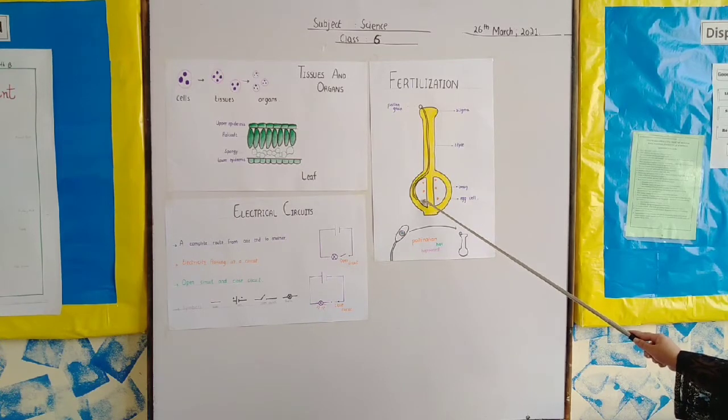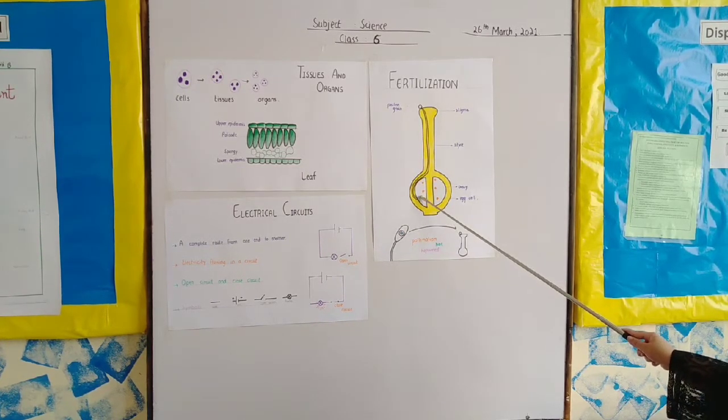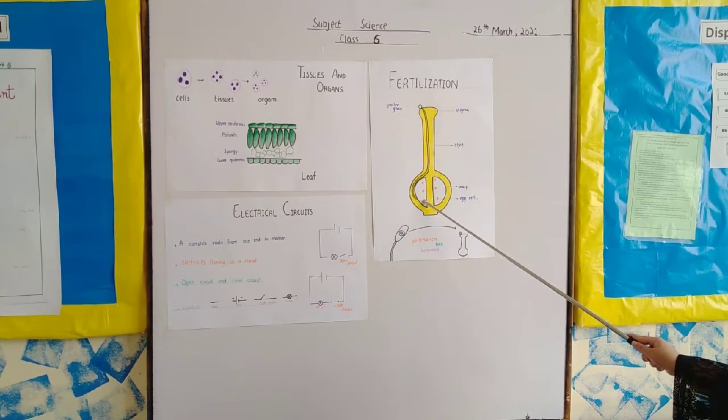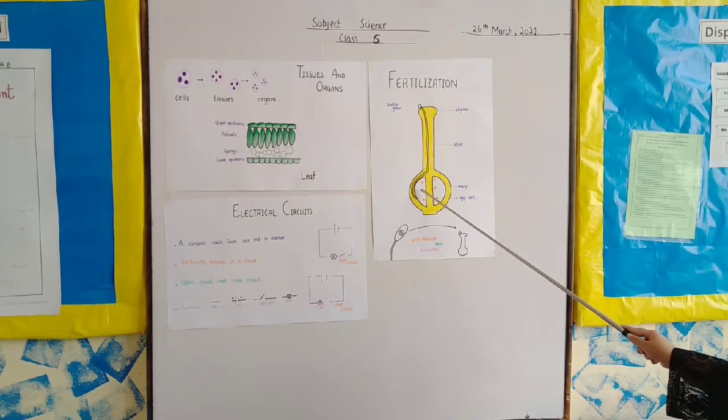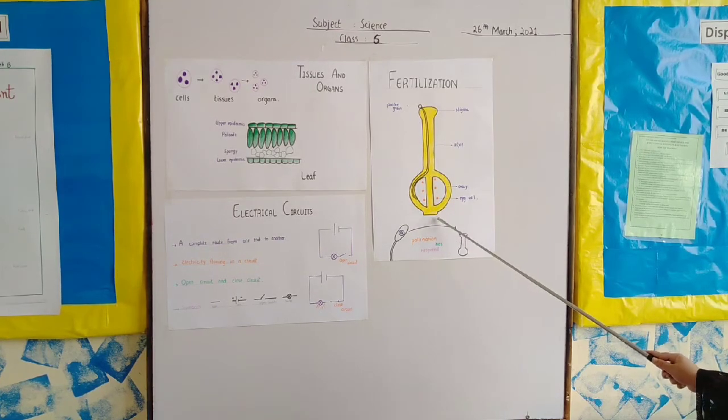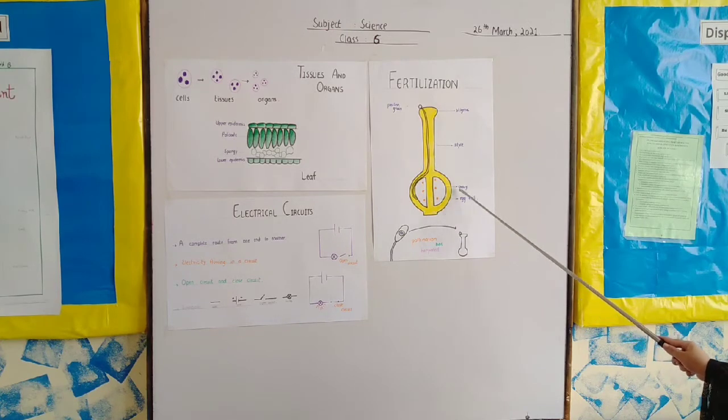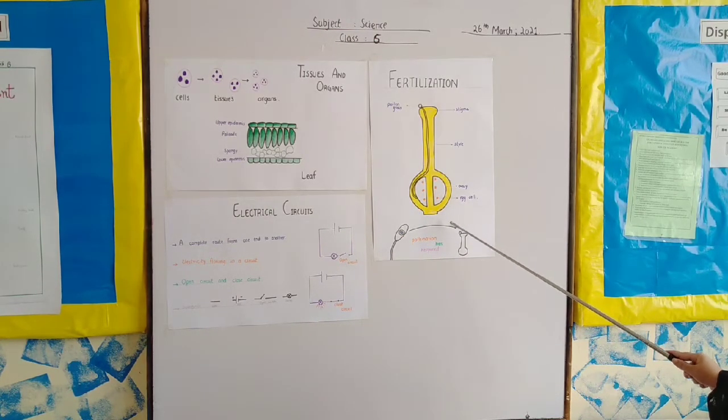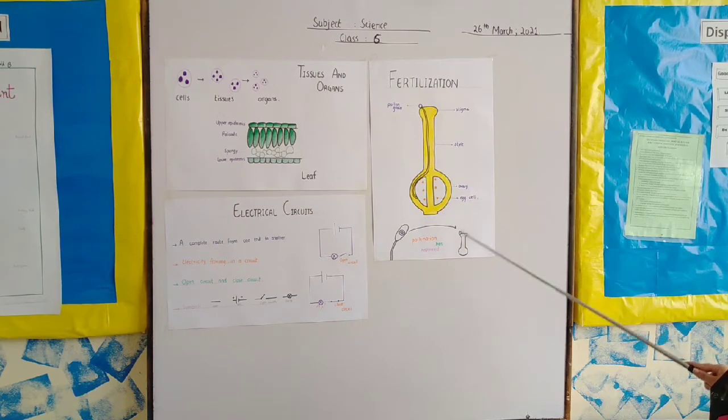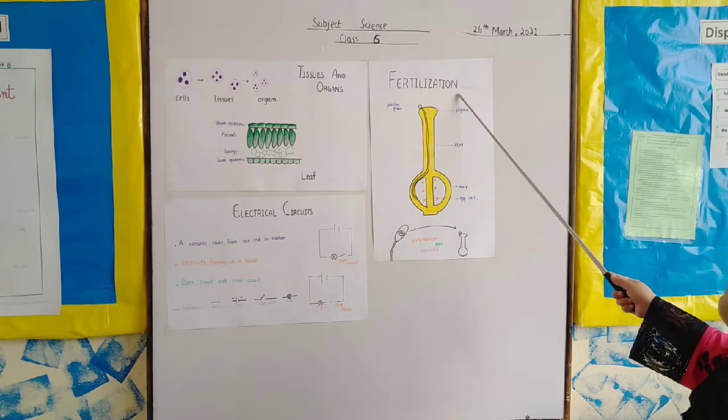In the ovary there is egg cell. Now what happens is that the pollen nucleus combines with the egg nucleus to form a new cell which then divides to form an embryo and seed. And then that seed grows into a grown plant. So this was fertilization.